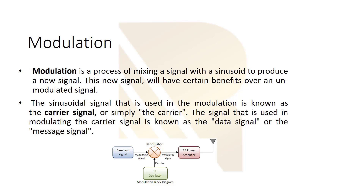The sinusoidal signal used in modulation is known as the carrier signal, or simply the carrier. The carrier has a high frequency. The signal used to modulate the carrier is known as the data signal or the message signal. So we have two kinds of signals: the carrier which has high frequency, and the data signal which has low frequency.